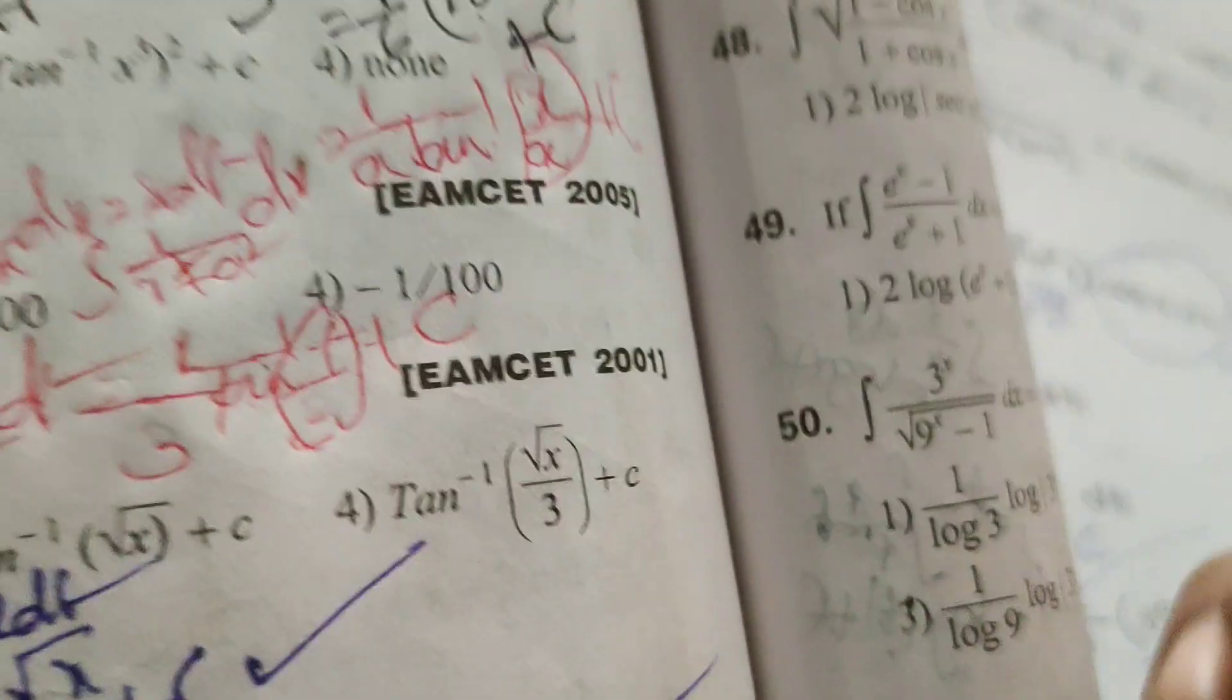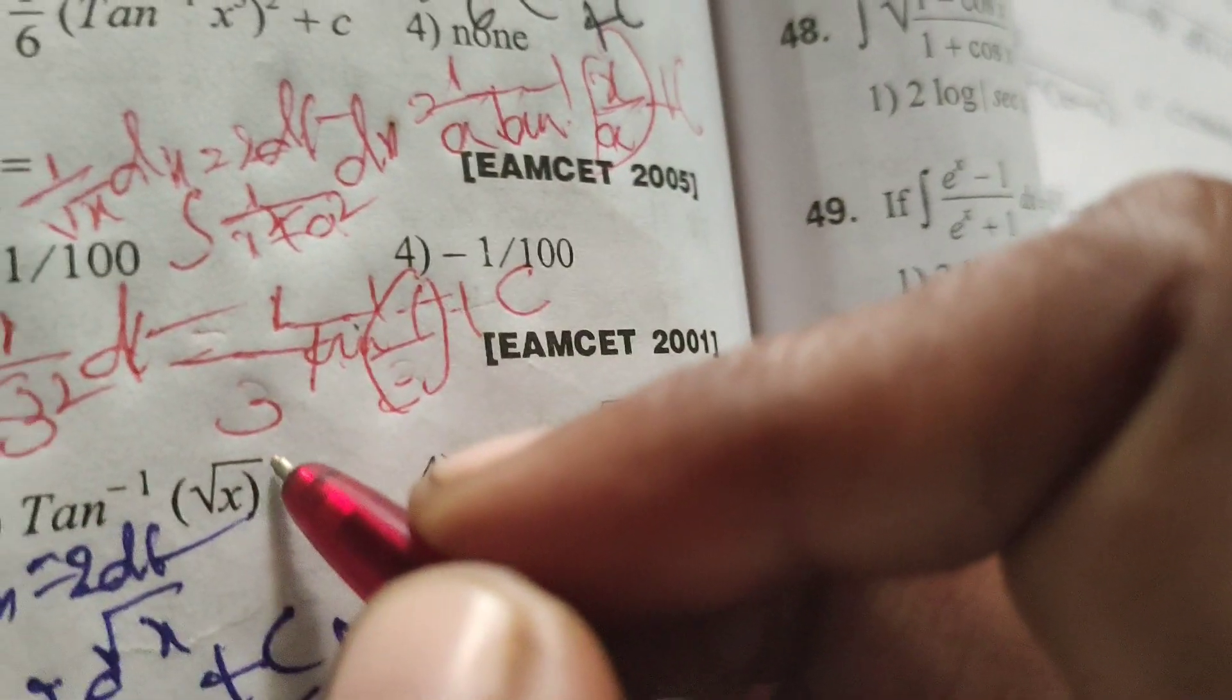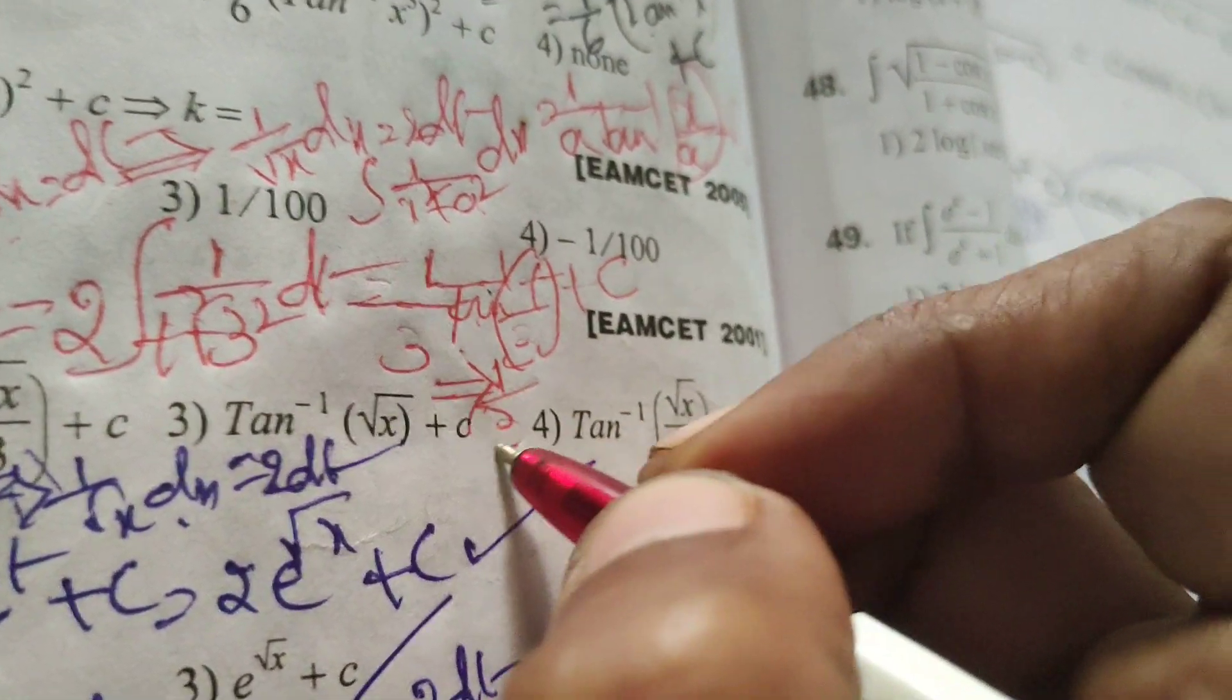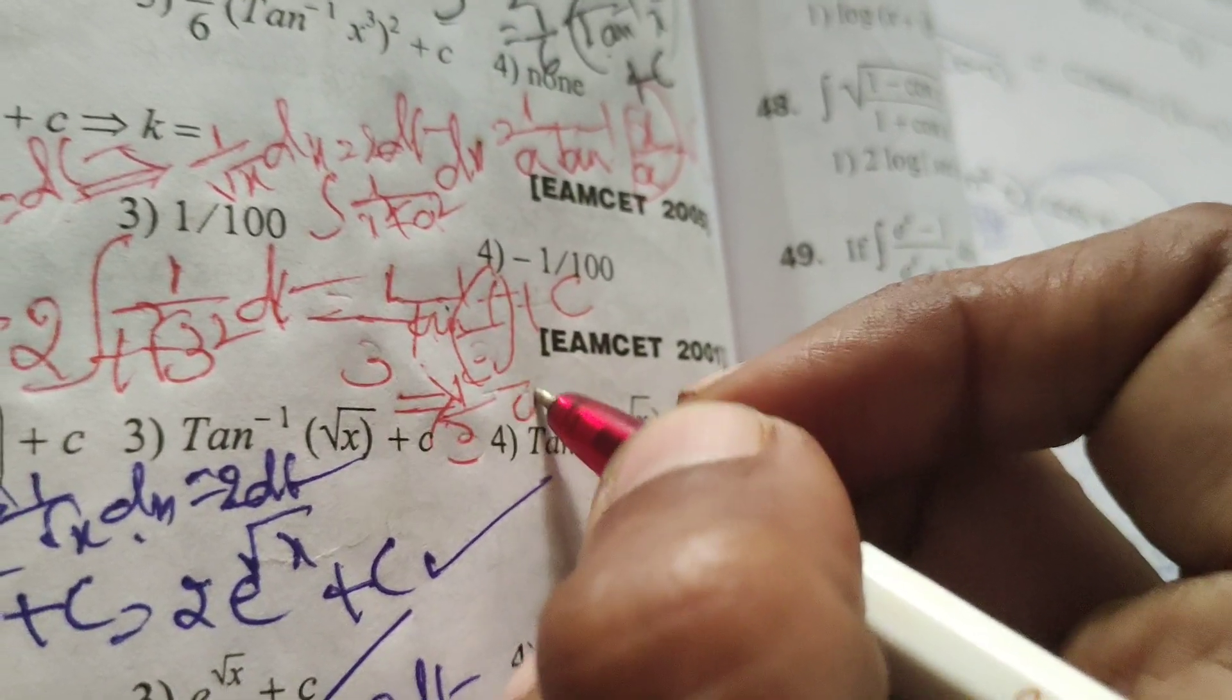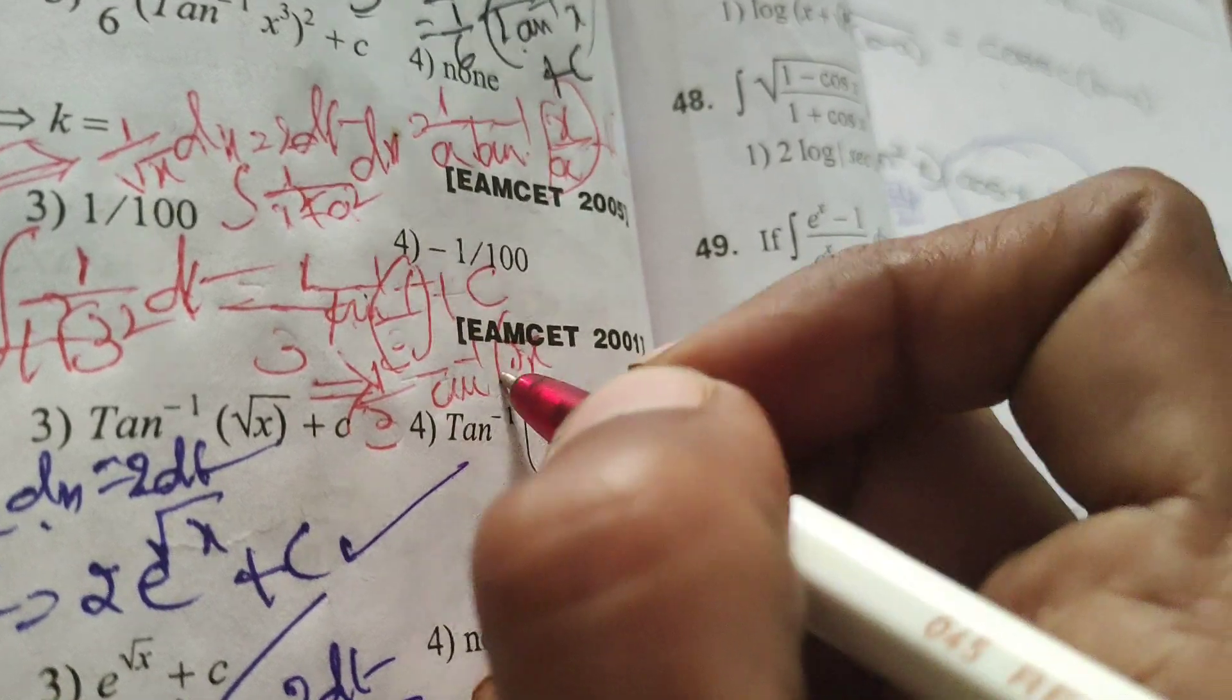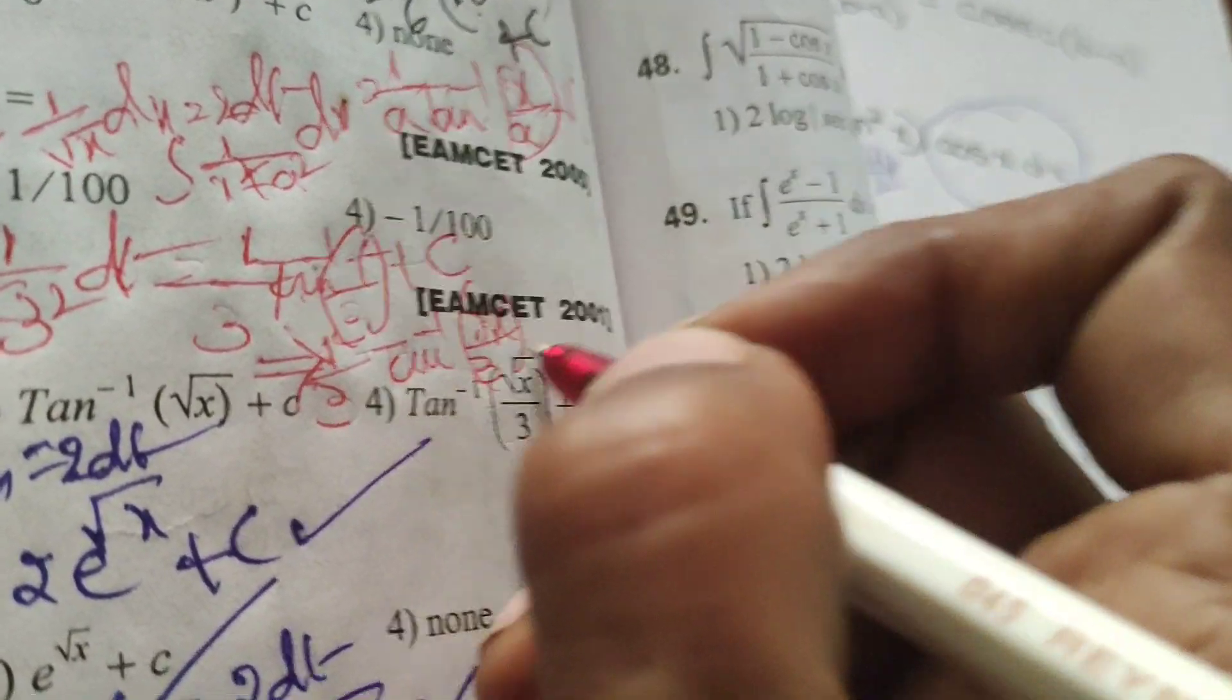Next, substituting back what is t from our substitution, root x. So we get 1 by 3 tan inverse of root x by 3 plus c.